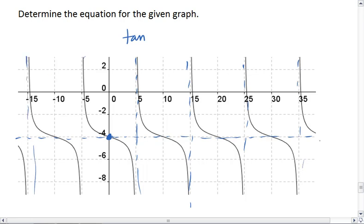Let's see. We're down at negative 4. Two of these last 20 units, so our period is 20.